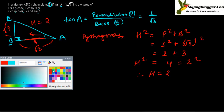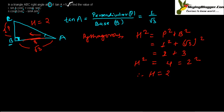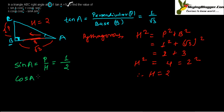Now we can easily find out the values one by one. First, sin A equals perpendicular upon hypotenuse — that is 1 upon 2. Also, cos A equals base upon hypotenuse — that is root 3 upon 2. We have finished finding sin A and cos A.